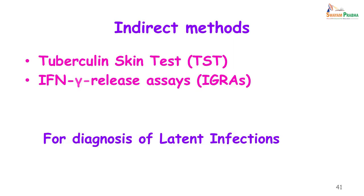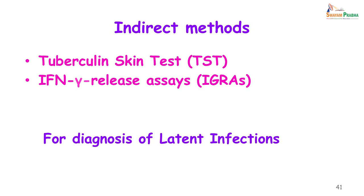So far we have looked at all the direct methods — seeing the bacilli, growing the bacilli, and doing drug susceptibility testing. Now let us look at some indirect methods for the diagnosis of tuberculosis. These tests only diagnose latent infection — where you have inhaled the bacilli, they are present in your body, but the infection has been contained. The two common tests are the tuberculin skin test and the interferon-gamma release assays (IGRAs).